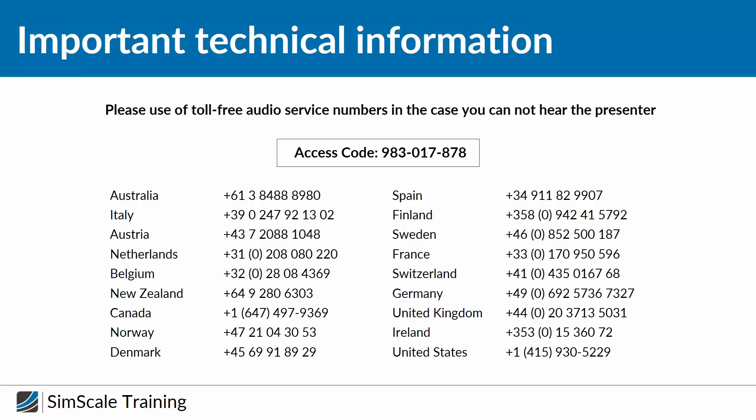Please click the raise your hand button on the GoToWebinar control panel. In case you would like to use your phone instead of your microphone and headset, you can also use our toll-free audio service numbers to directly connect to the audio stream of this webinar. Just dial one of these numbers according to the country you're living in and enter the access code 983 017 878.